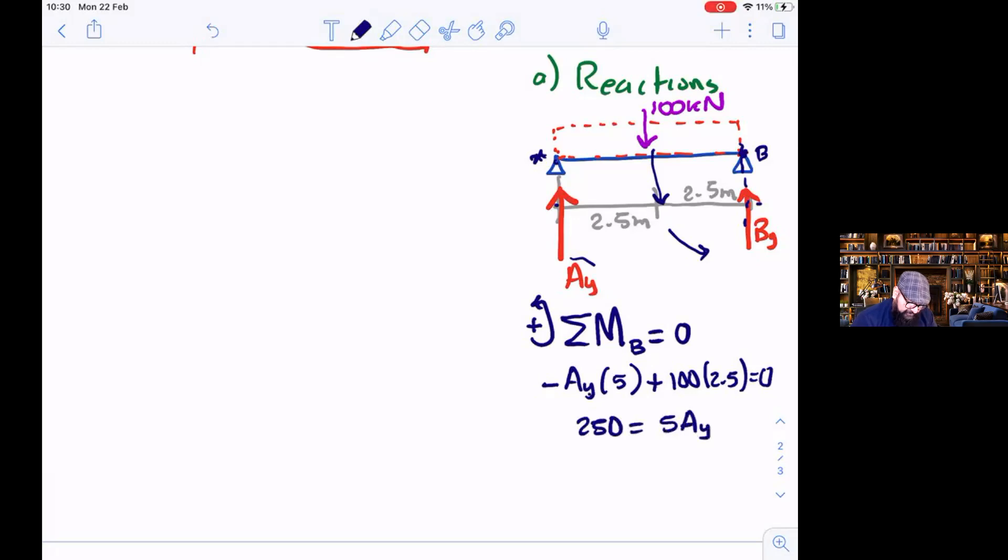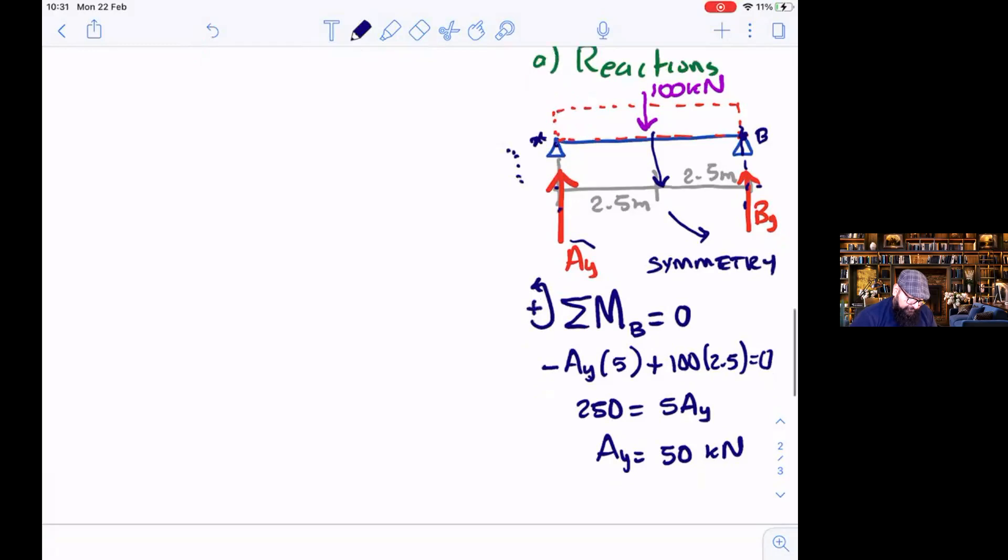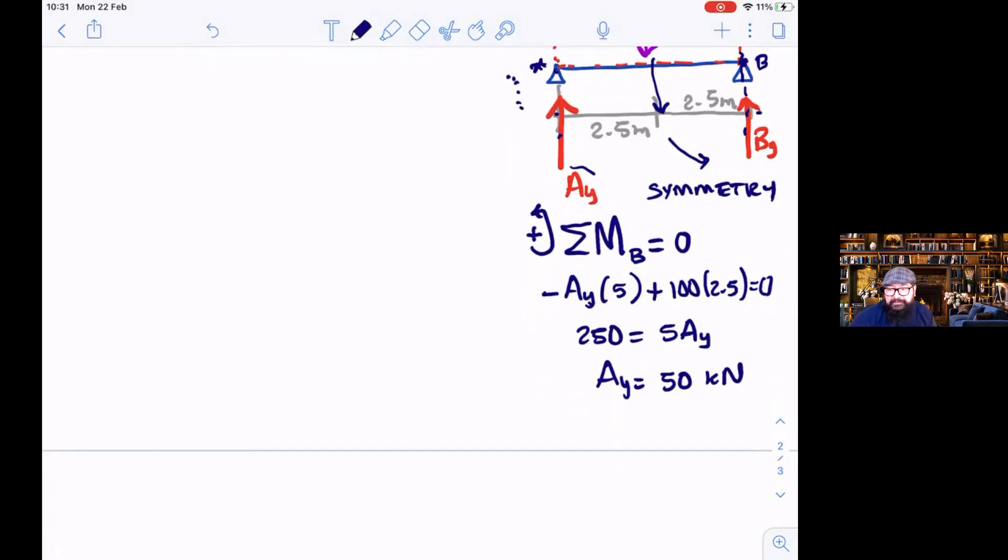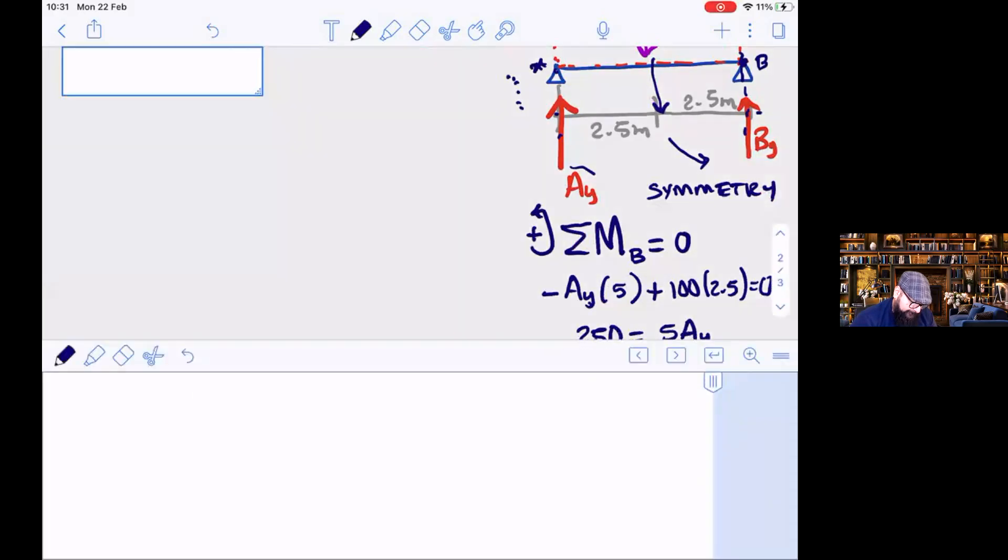There's nothing else because this one passes through B, it's not producing moment. Therefore I get this. I pass this to the other side with a change of sign and I get Ay equals what. Just by inspection, by looking at this drawing, you can see that there's symmetry. Immediately you should think that the value of Ay should be equal to By, the symmetry.